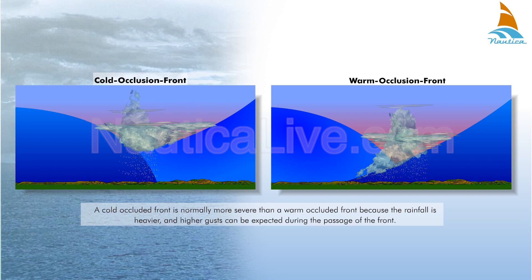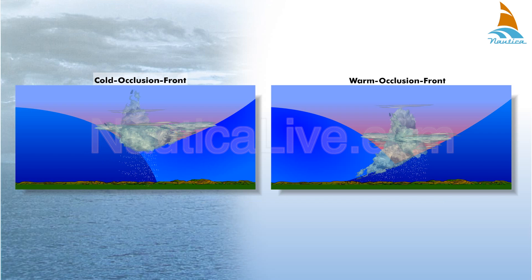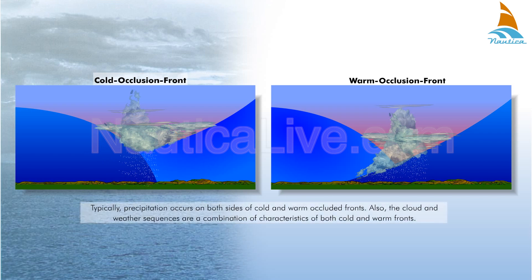A cold occluded front is normally more severe than a warm occluded front because the rainfall is heavier and higher gusts can be expected during the passage of the front. Typically, precipitation occurs on both sides of cold and warm occluded fronts. Also, the cloud and weather sequences are a combination of characteristics of both cold and warm fronts.